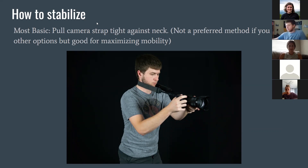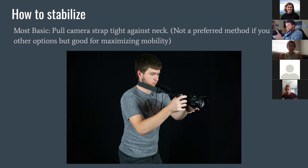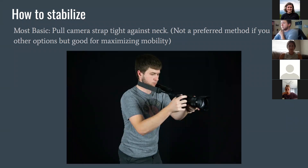The most basic stabilization technique is to pull the camera strap tight against your neck. It's not a preferred method if you have other options, but it's good for maximizing mobility. You can make yourself into a makeshift tripod and move with your camera — you'll notice a big difference between holding it with tension in the strap versus no tension. It's way harder to hold steady without it. I used to use this technique a lot but have tried to move away from it for more serious projects.